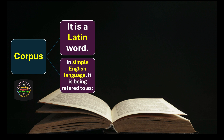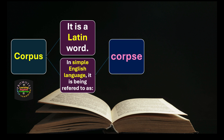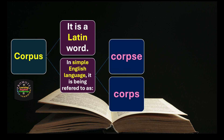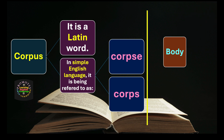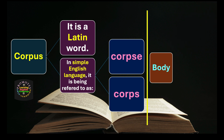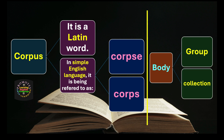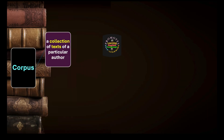The word 'corpus' is a Latin word. In simple English it is related to the word 'corpse' (spelled C-O-R-P-S-E) and also 'corps' (C-O-R-P-S). Both of them refer to the same Latin word 'corpus,' and it refers to the idea of body — body as a group of something, body as a collection of something, not a human body of course.